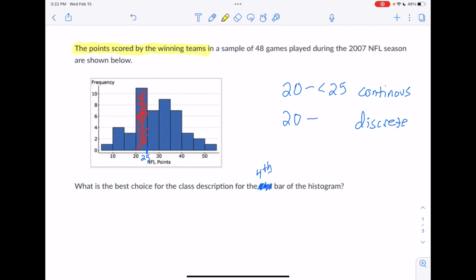So what's the largest number of points you could have and still be in the class 20 through less than 25? Well, because it has to be less than 25, that would be 24.